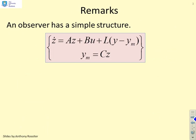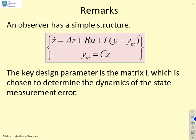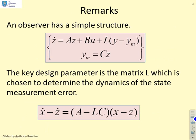So an observer has a very simple structure. The key design parameter is the matrix L, which is chosen to determine the dynamics of the state measurement error. We're interested in this matrix A minus LC, and L is what we can choose.